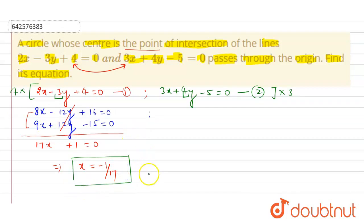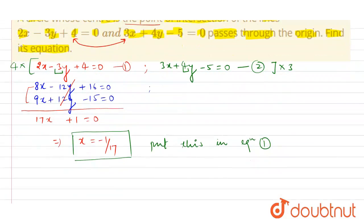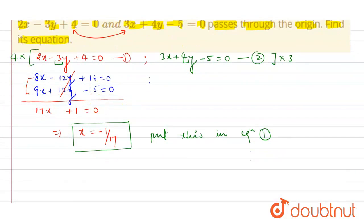Now students, if I substitute this value in equation number 1, then students you will get 2×(-1/17) - 3y + 4 = 0.